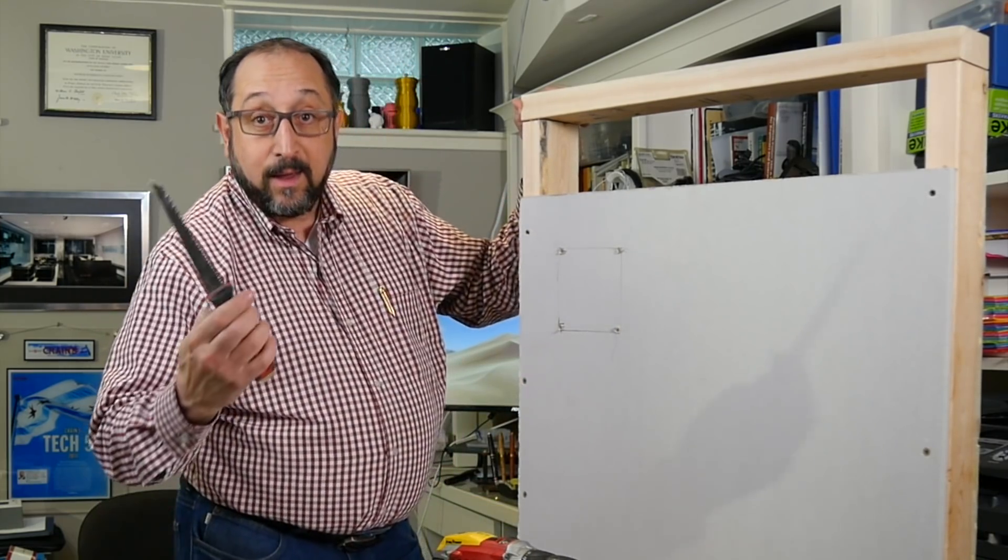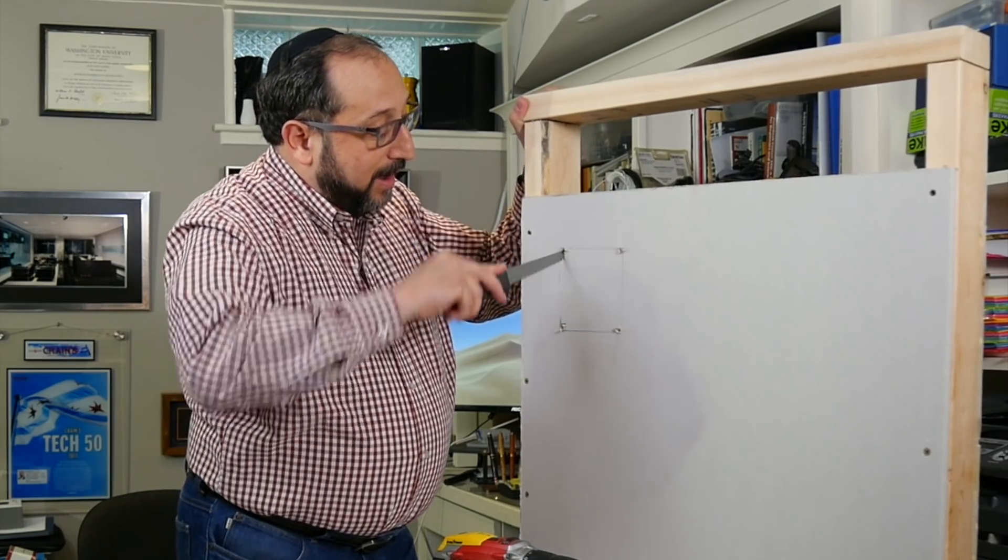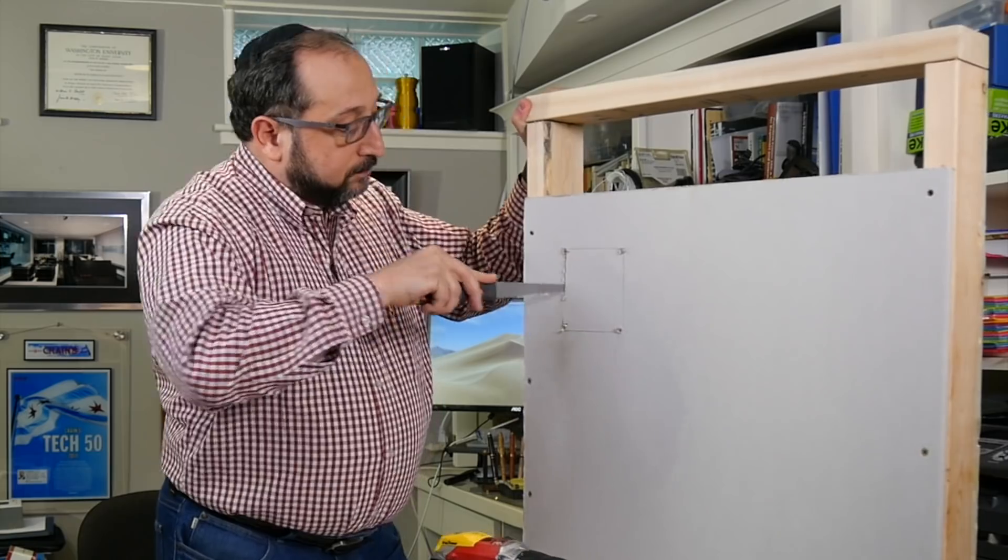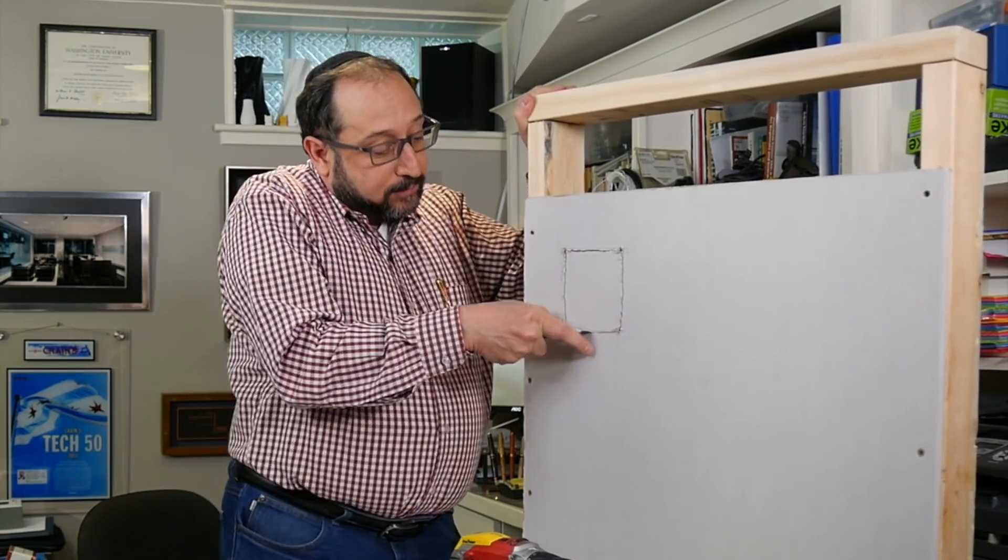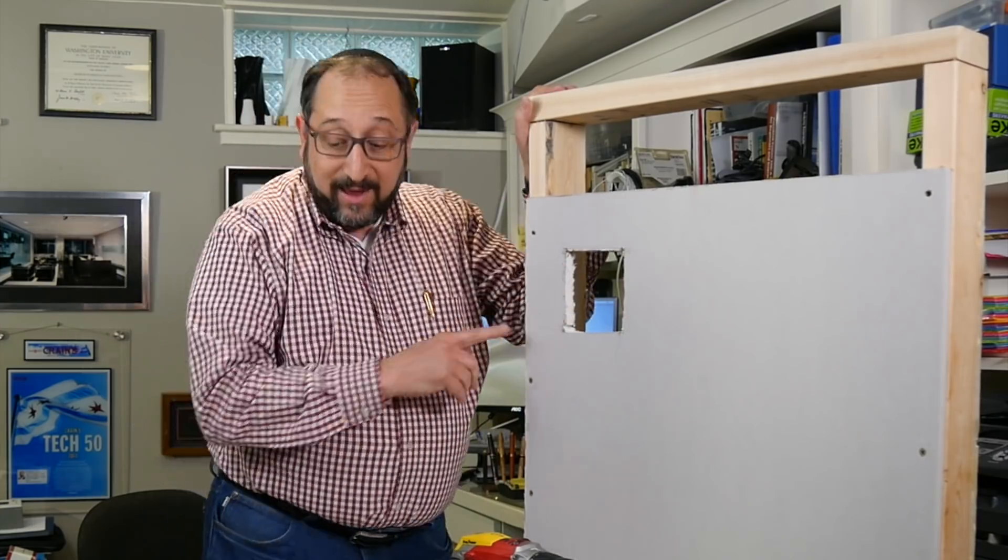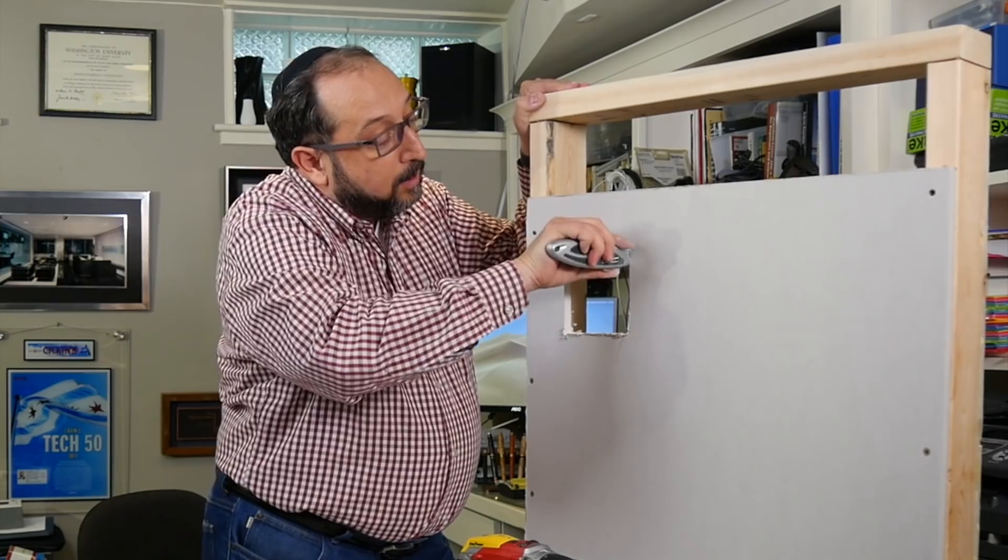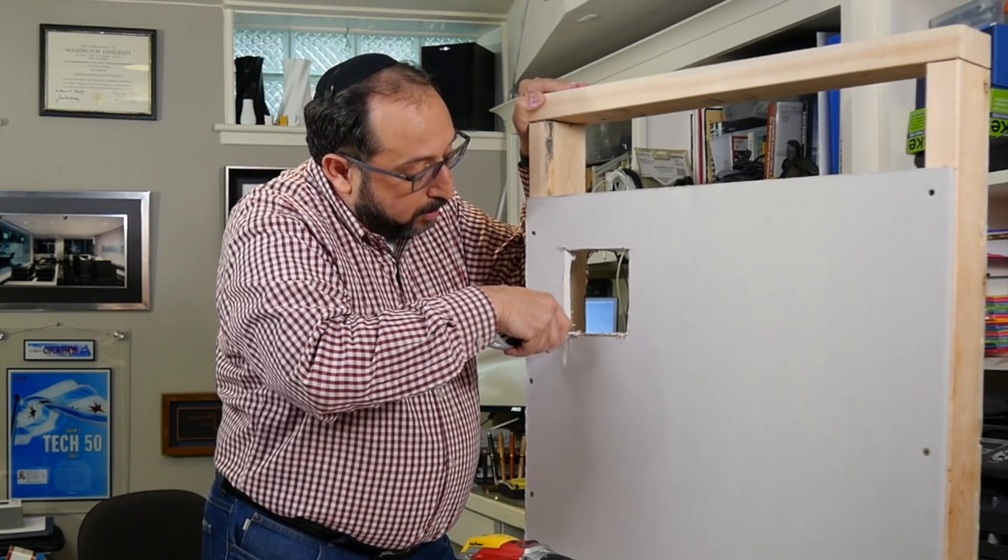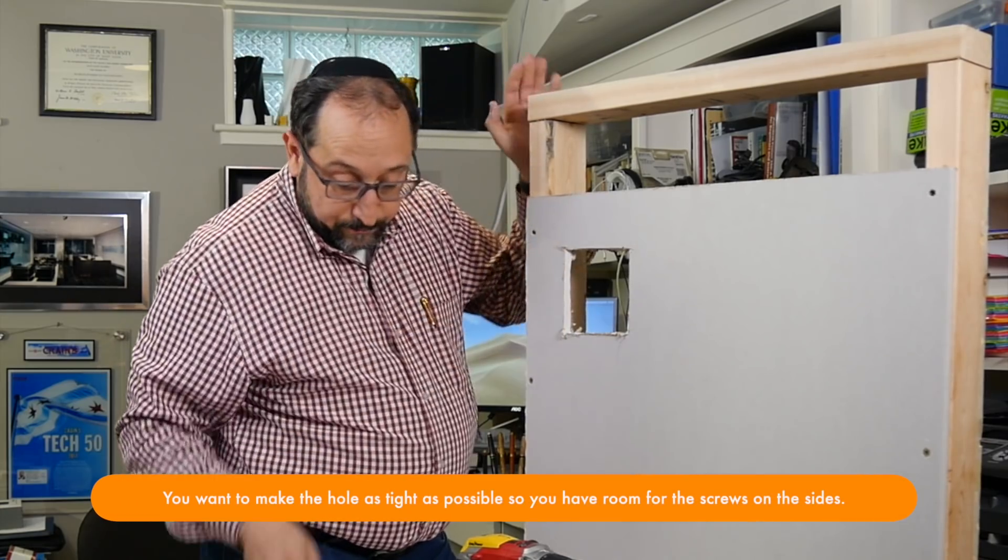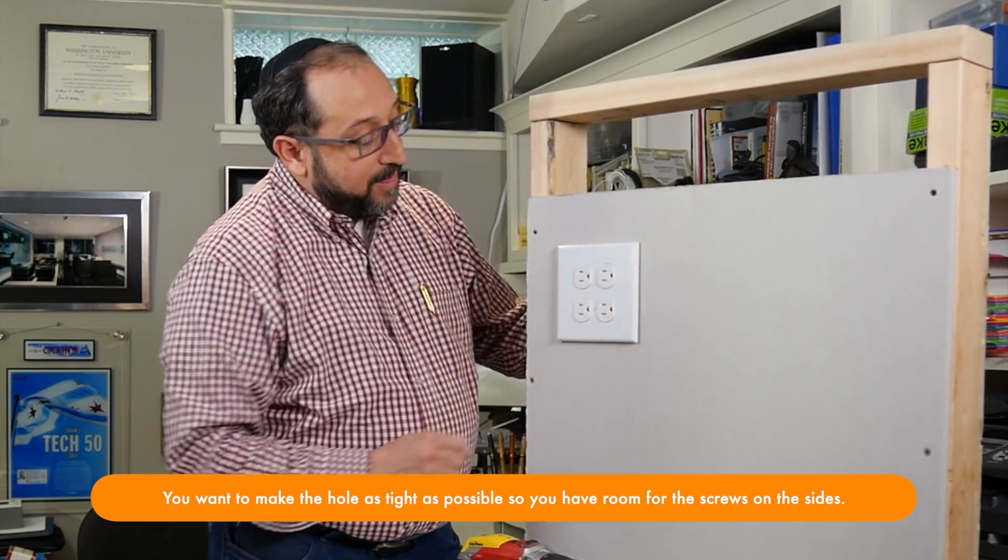So there we go. Now you take your drywall saw and you get it into the first hole and there we go.